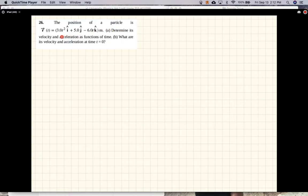This problem says the position of a particle is r equal to 3t squared i plus 5j minus 6tk. Determine its velocity and acceleration as a function of time. What are its velocity and acceleration at time t equal to 0?